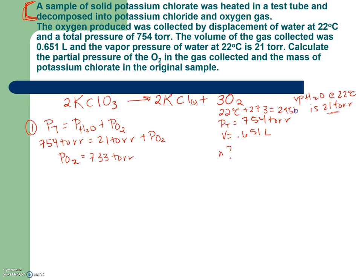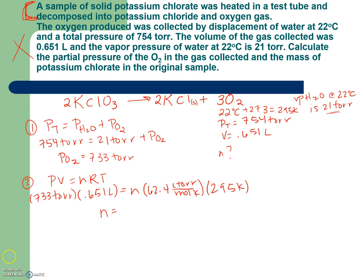And so then I'm going to set up my second part, which is PV. Notice I'm not going back to this part of the problem at all. Everything now is down here. PV equals nRT. I'm going to use the pressure of just the O2, because that's what I want to find. So 733 torr. My volume is the 0.651 liters. Moles is what I'm looking for. R is 62.4 liters torr moles Kelvin. And my temperature is 295 Kelvin. I'm going to go ahead and solve that for n. And when I do solve that, I get 0.0259 moles of O2.